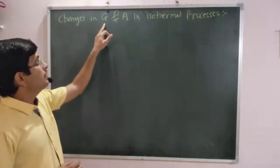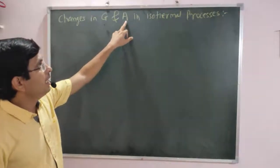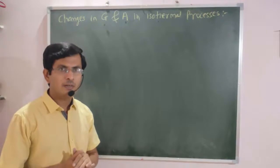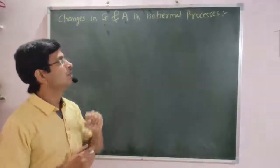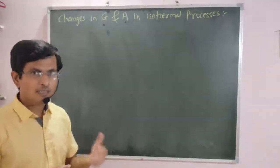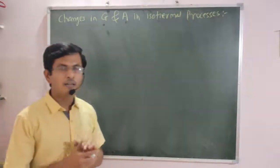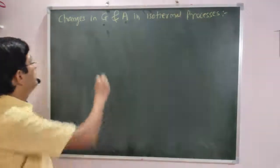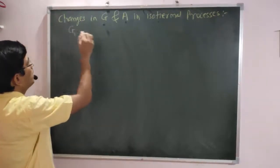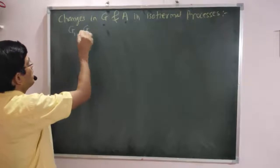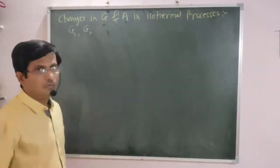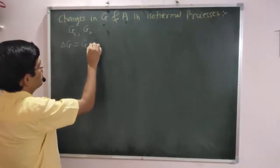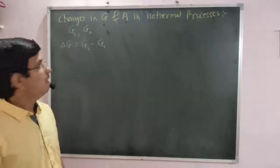Now, changes in Gibbs free energy G and Helmholtz work function A in the case of an isothermal process. An isothermal process means the process which is carried out at constant temperature. Consider a thermodynamic change from an initial state to the final state. The free energy of the initial state is G1 and of the final state is G2. The overall free energy change is delta G is equal to G2 minus G1.